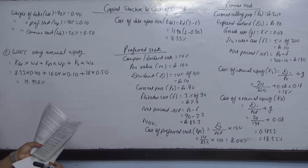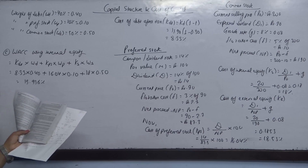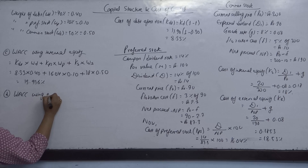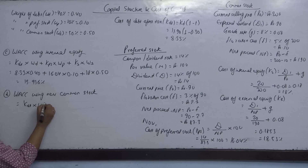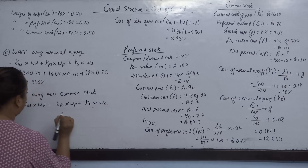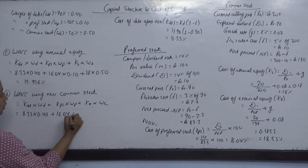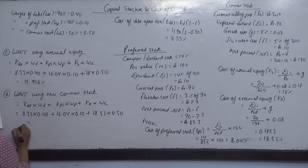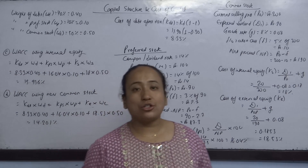For part D, WACC using new common stock only for the equity portion: all other values remain the same, but equity cost is KE = 18.53% instead of KS. WACC = 8.33×0.40 + 16.04×0.10 + 18.53×0.50 = 14.20%.